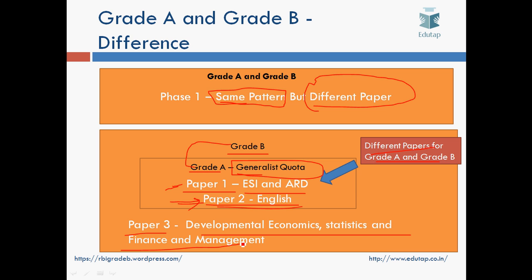In short, if you are applying for both Grade A and Grade B, preparation-wise for Grade B you have to prepare an additional paper — Development, Economics, Statistics, Finance and Management — that is Paper 3. But with respect to appearing in the exam, you have to attempt even Paper 1 and Paper 2 separately if you are sitting for both Grade A and Grade B.